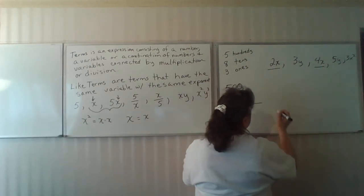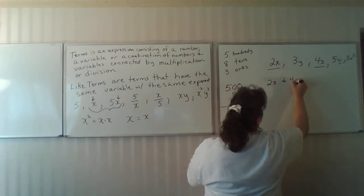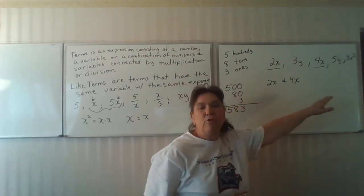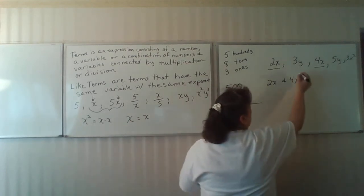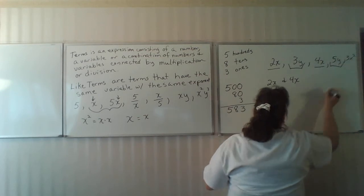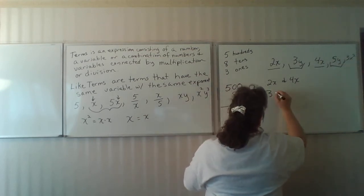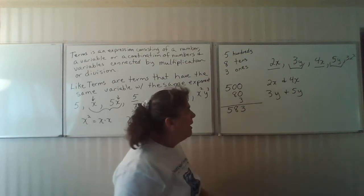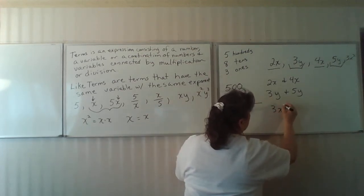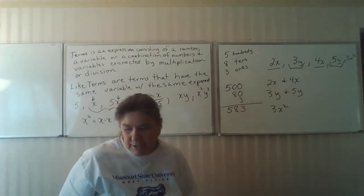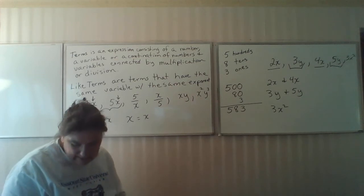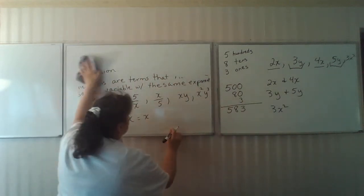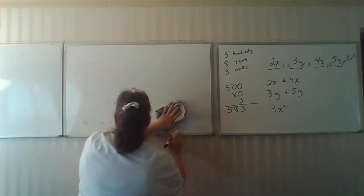2x and 4x are like terms. They're the same variable, the same exponent. It would be like saying two apples and four apples. 3y and 5y. Let's say these are carrots. They're the same thing. And then I have a 3x squared, and it isn't like anything. We can add and subtract these like terms. If they are not the same, we cannot.